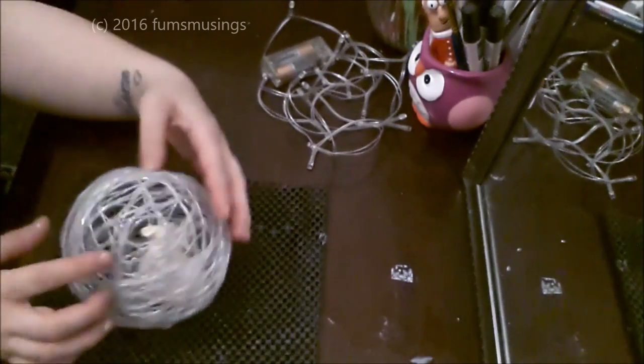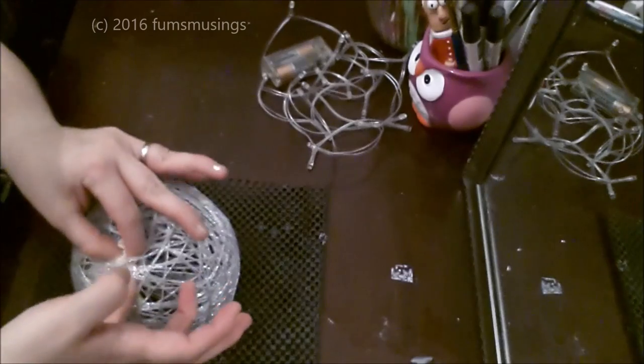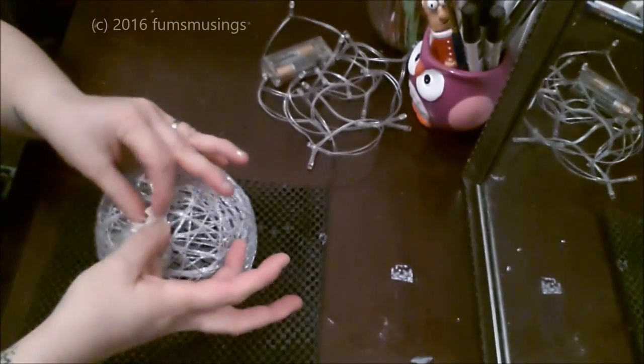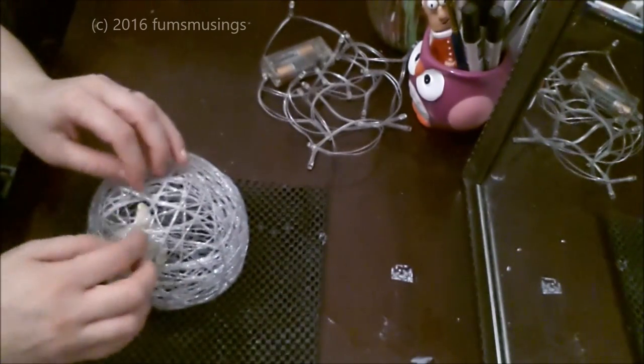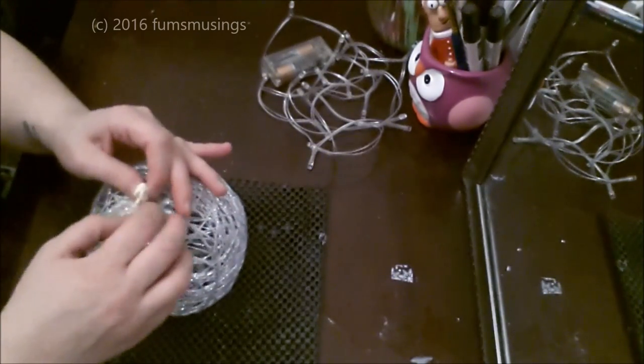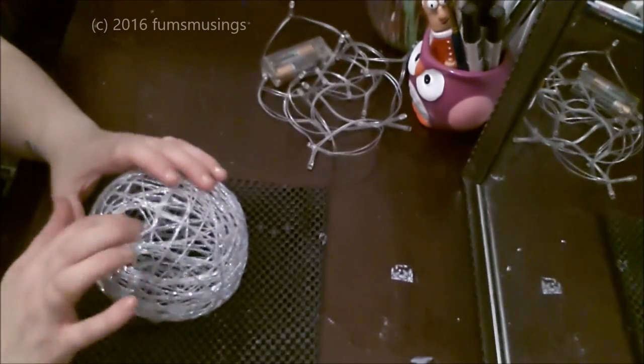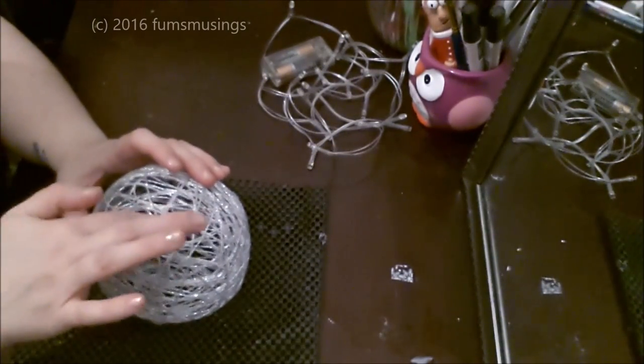And then it's just a case of taking out the deflated balloon. Mine was actually glued to the piece of string in this section quite a lot so that's why it's a bit fiddly for me to take it out. And I've got a bit of string twisted around the knot but any loose bits just tuck them back inside.